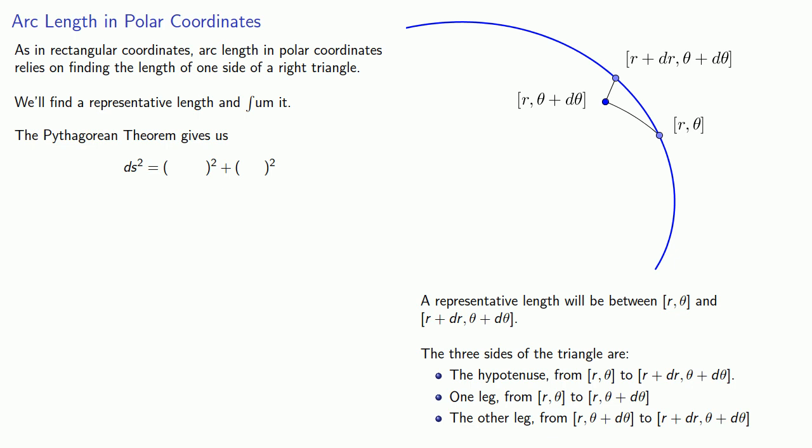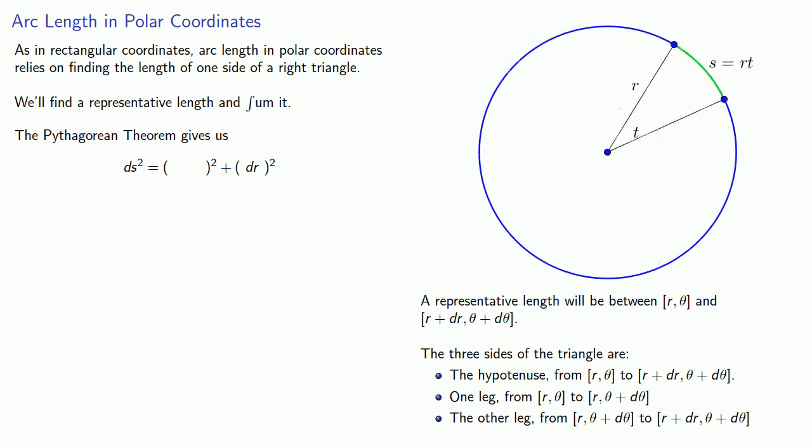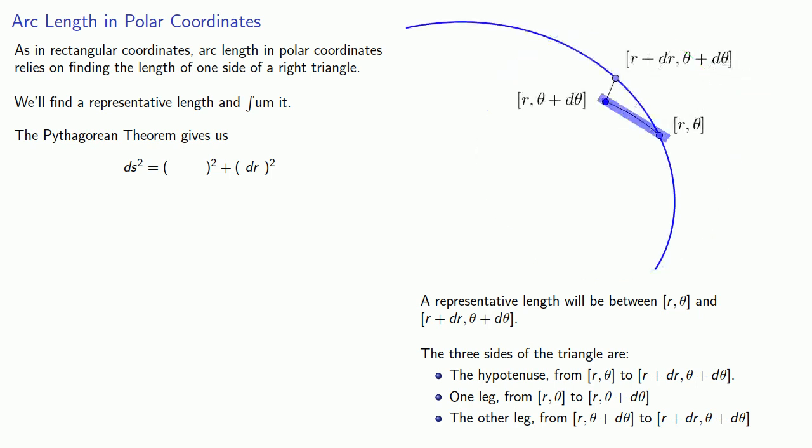So the length of this other leg is just dr. For the length of the first leg, we have to go back to geometry. And remember that if we have an arc on a circle of radius r with a central angle of t, the arc length s is just going to be r times t. So this arc, which corresponds to the arc of a circle with radius r, has central angle dθ, so this arc length is going to be r dθ.